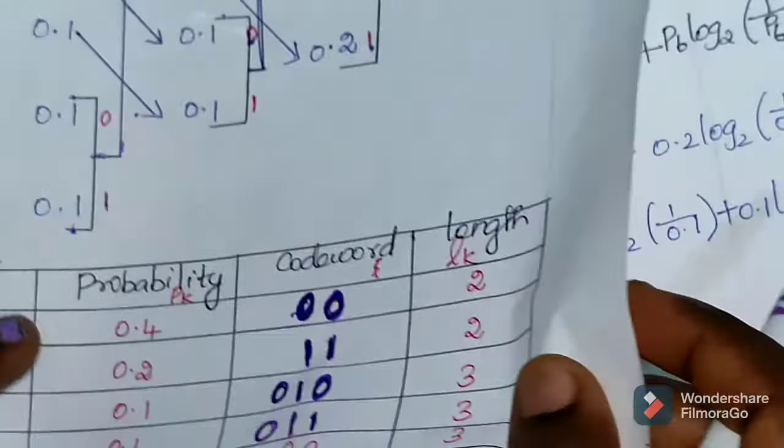Now calculate the average codeword length using the same procedure. The formula is L bar equals summation k equals 1 to K of pk times lk. Capital K is the number of symbols. In this problem, the number of symbols is 6.